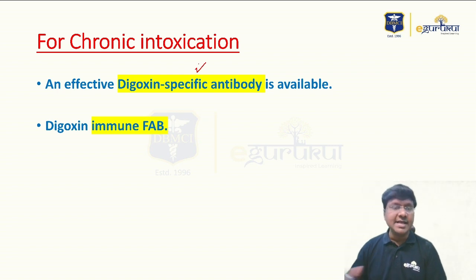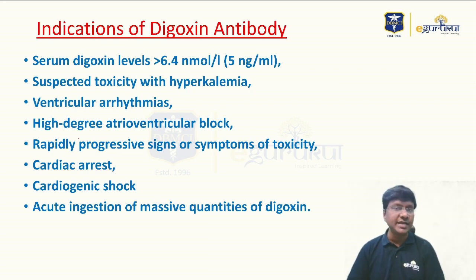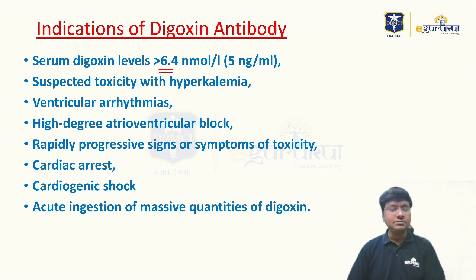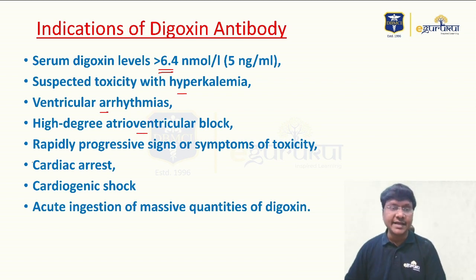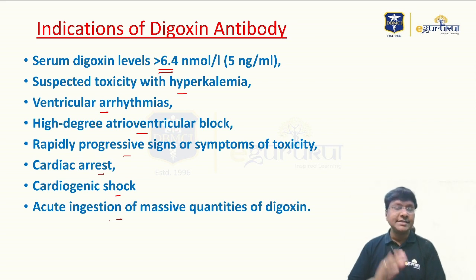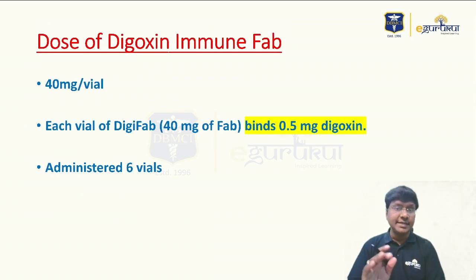The digoxin-specific antibody is called Digoxin Immune Fab, available for chronic intoxication. The indications for Digoxin Immune Fab include: levels more than 6.4 nanomoles per liter (our patient is at 7.2), suspected toxicity with hyperkalemia, ventricular arrhythmias secondary to digoxin toxicity, high-degree AV block, rapidly progressive signs or symptoms, cardiac arrest, cardiogenic shock, or acute ingestion of massive quantities of digoxin.